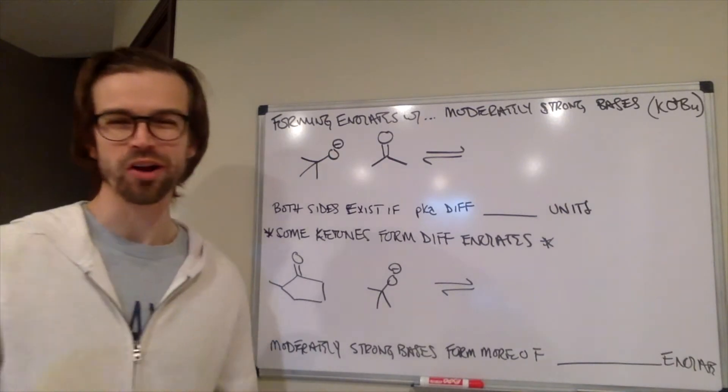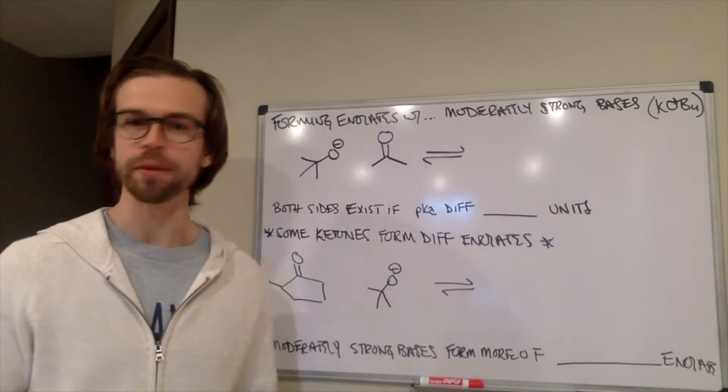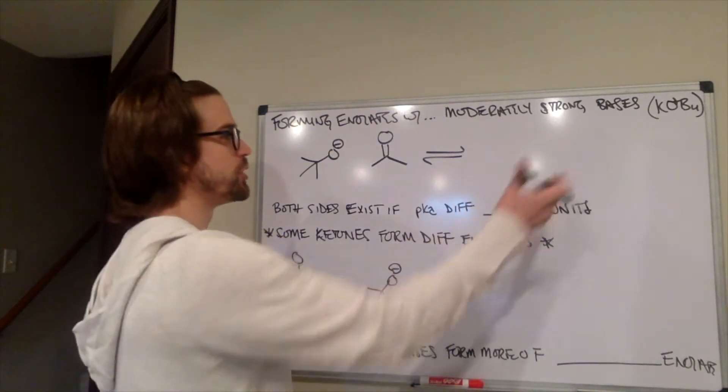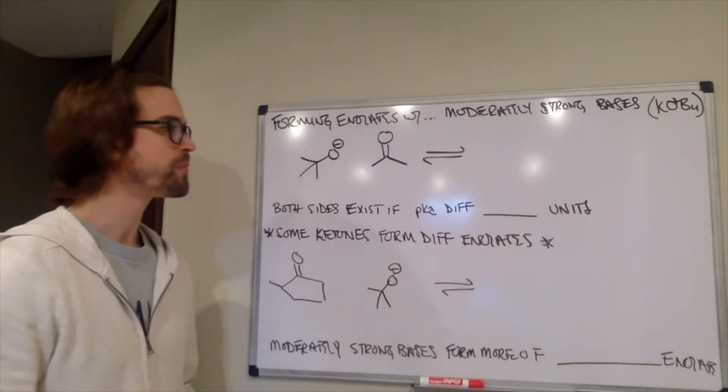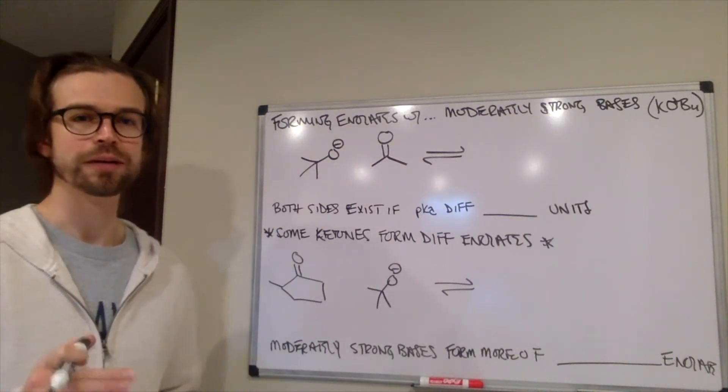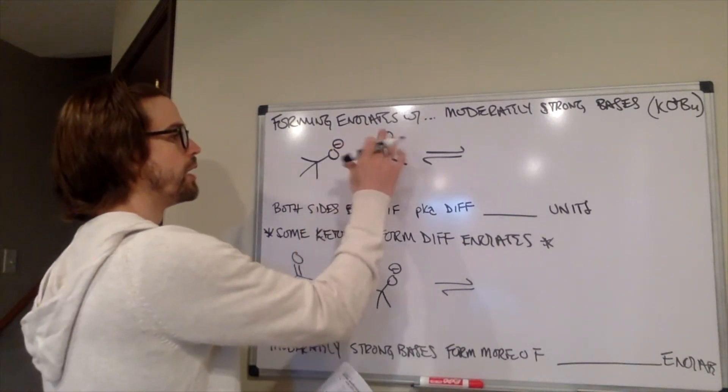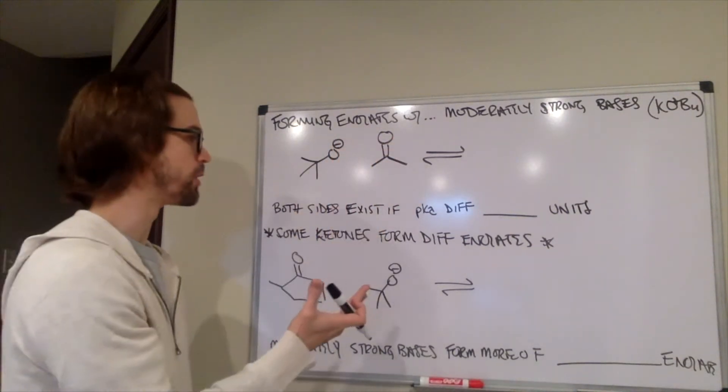One category I would call moderately strong bases, so something like potassium tert-butoxide would fit into that bucket. And how does that form an enolate with something like acetone, this molecule here?